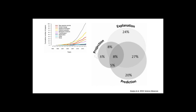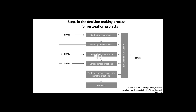Ecological niche models can contribute to the decision-making process for restoration projects, a step rarely taken. One approach to do this is structured decision-making, which provides a rigorous framework for this process and is becoming increasingly used to address environmental problems. This approach is usually sequential, with potential roles for ecological niche models at most stages of the decision process.